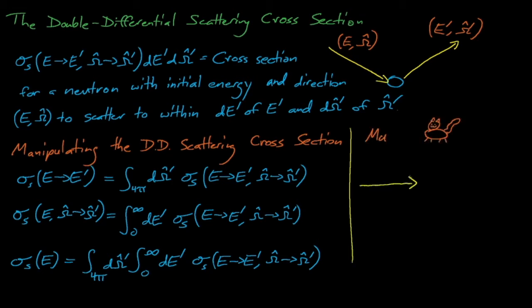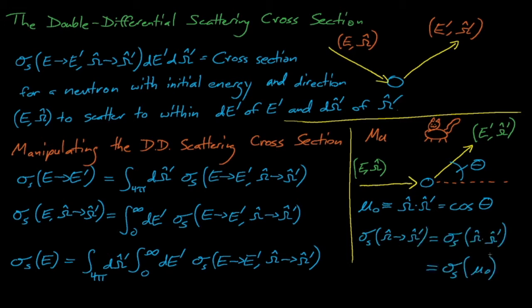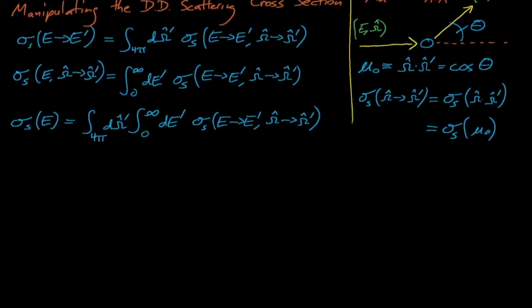It's worth mentioning that these scattering cross-sections are usually represented in terms of mu-naught instead of omega, where mu-naught is the cosine of the angle at which the neutron is deflected by the scattering reaction. Essentially, mu-naught is the dot product of the initial pre-scatter and the final post-scatter solid angles. The probability of scattering off of a nucleus generally does not depend on the direction of the incoming neutron, so it's convenient to use mu-naught when describing scattering kinematics data. The one exception is thermal scattering, when neutrons behave like waves and diffract off of groups of target nuclei, and the orientation of the material's atomic crystal structure has an enormous influence on how the neutron diffracts.